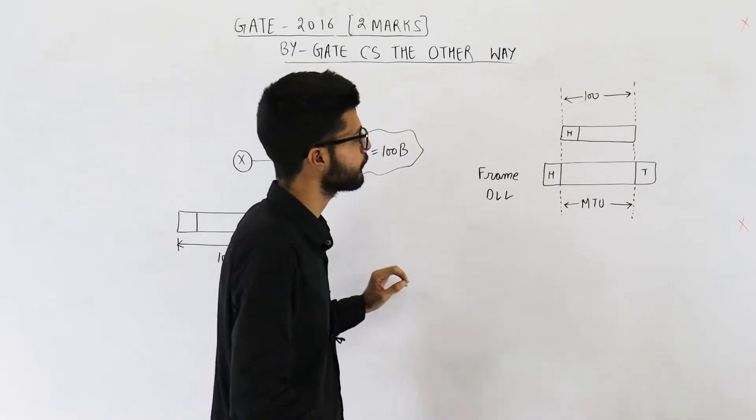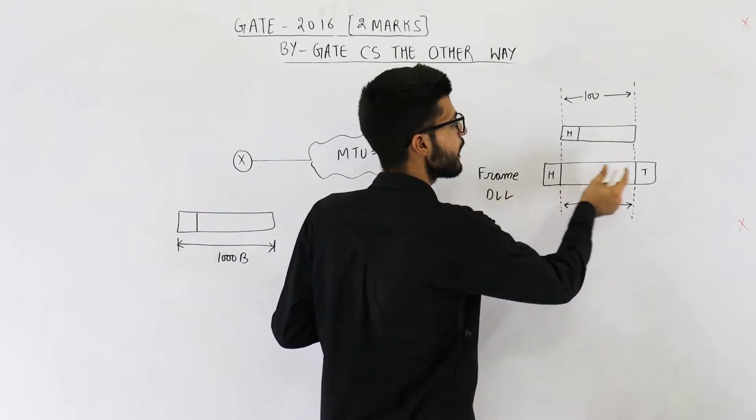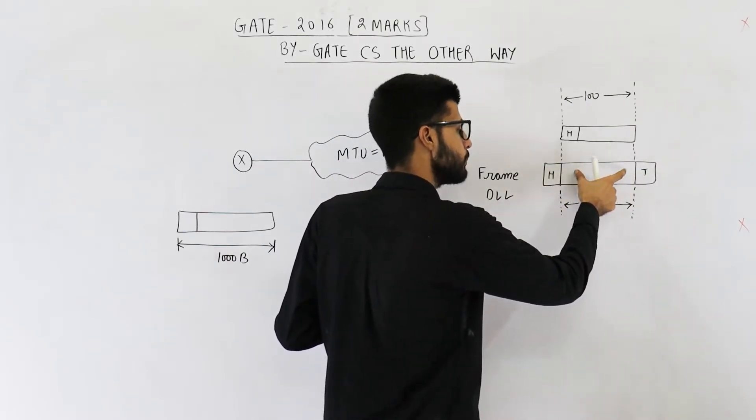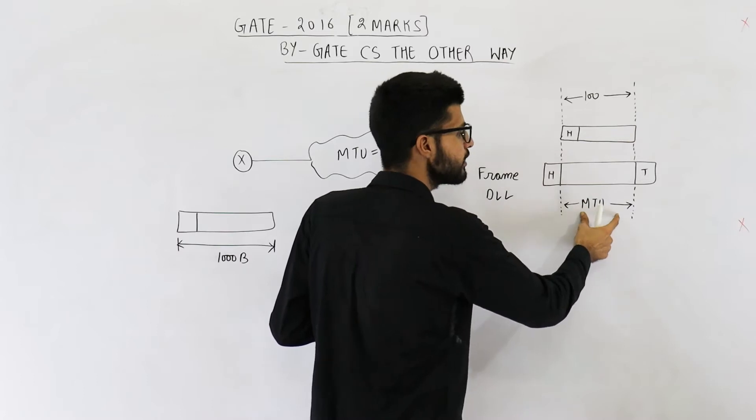So just take a data link layer frame. Don't count header and trailer. The maximum data that can be present inside this frame is MTU.